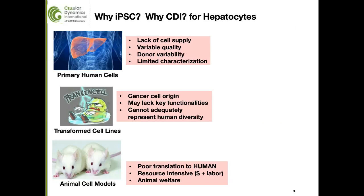Where might iPSC-derived cells contribute to your project or workflow? If you are using commonly employed hepatocyte cell models, you are familiar with both the benefits and limitations of primary human hepatocytes or HepG2 cells. The limited availability and high variability of primary human cells, the lack of key functionalities in transformed cell lines, and the poor representation of human diversity with animal models have really underscored the importance of iPSC technology and motivated researchers to consider other sources.